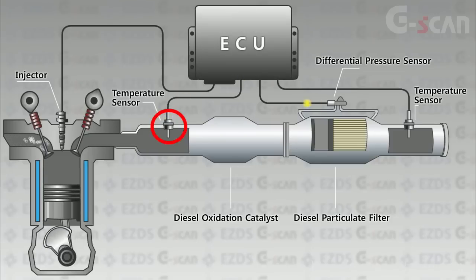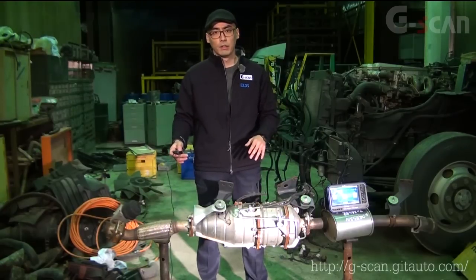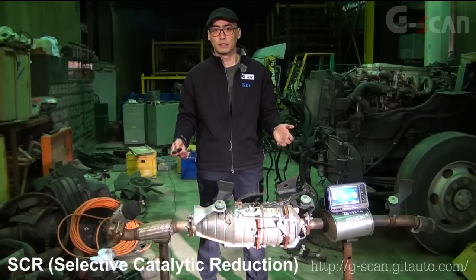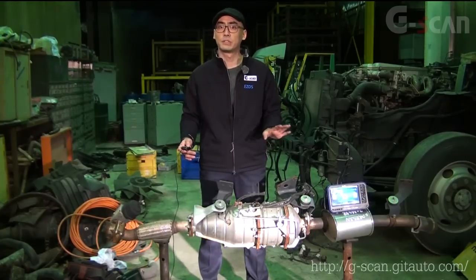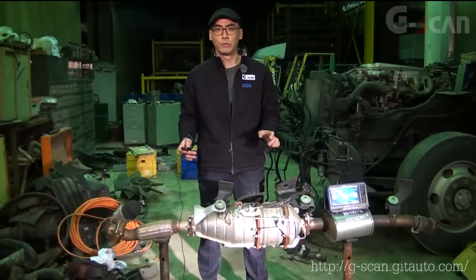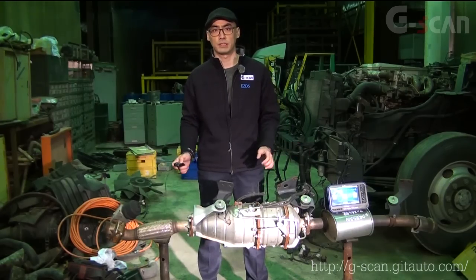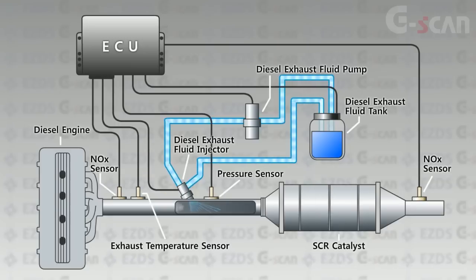Other than the DPF system, there is the SCR — Selective Catalytic Reduction system. This technology is another advanced emission control system that injects special diesel exhaust fluid, urea 80 blue, through a special catalyst into the exhaust stream of a diesel engine. SCR can effectively reduce NOx emissions while simultaneously reducing hydrocarbon, particulate matter, and carbon monoxide emissions. SCR systems can also be combined with a diesel particulate filter to achieve even greater emission reductions for PM.